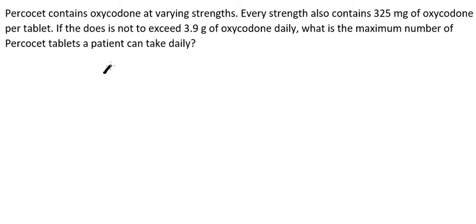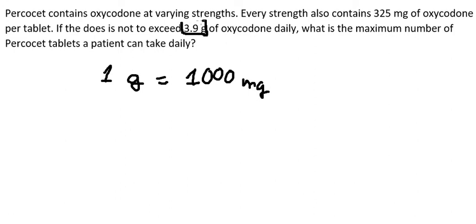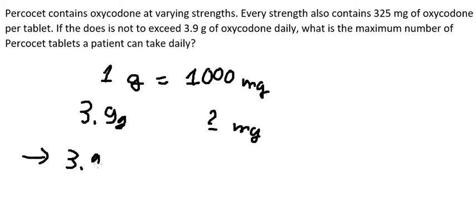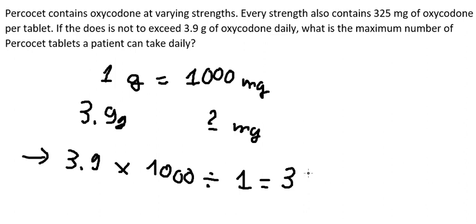We know that one gram equals 1000 milligrams. So we have 3.9 grams, and we need to transform this into milligrams. We put 3.9 multiplied by 1000, then divide by one as a ratio, giving us 3900 milligrams.